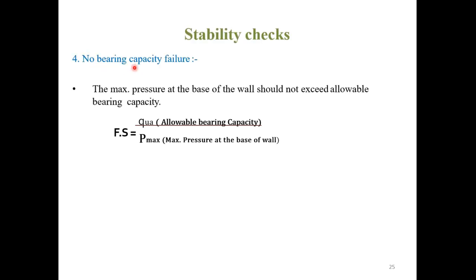Last stability check — no bearing capacity failure: The factor of safety is the allowable bearing capacity divided by the maximum pressure at the base. The maximum pressure at the base of the wall should not exceed the allowable bearing capacity. The factor of safety should be greater than 1.